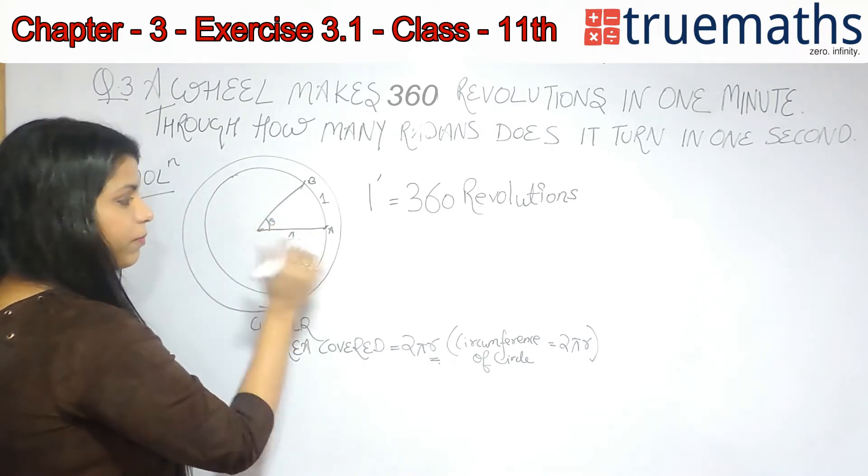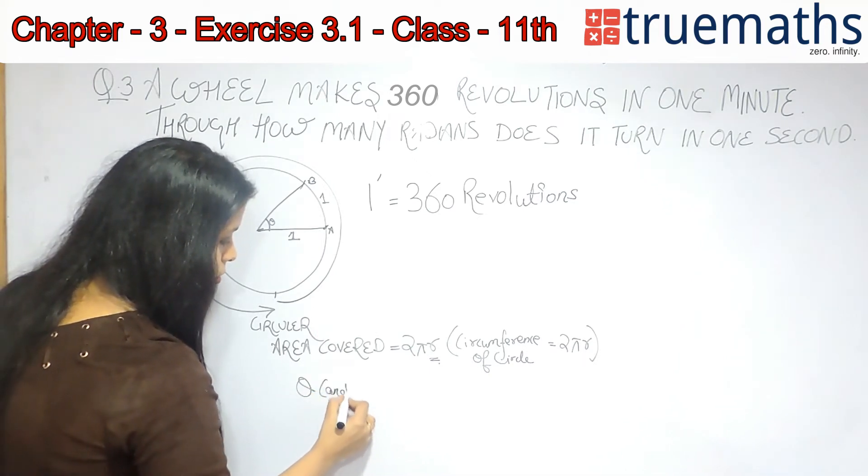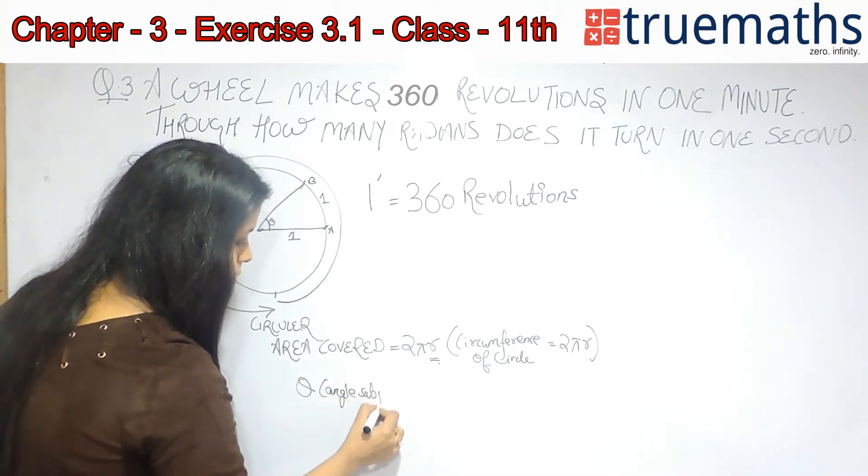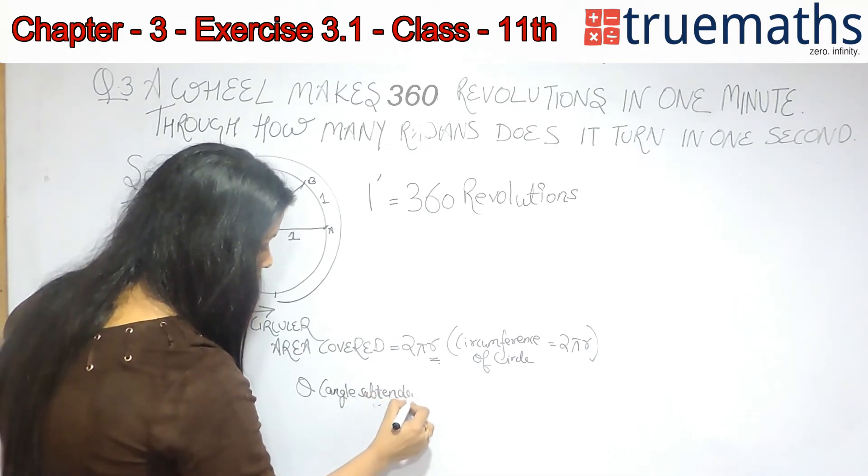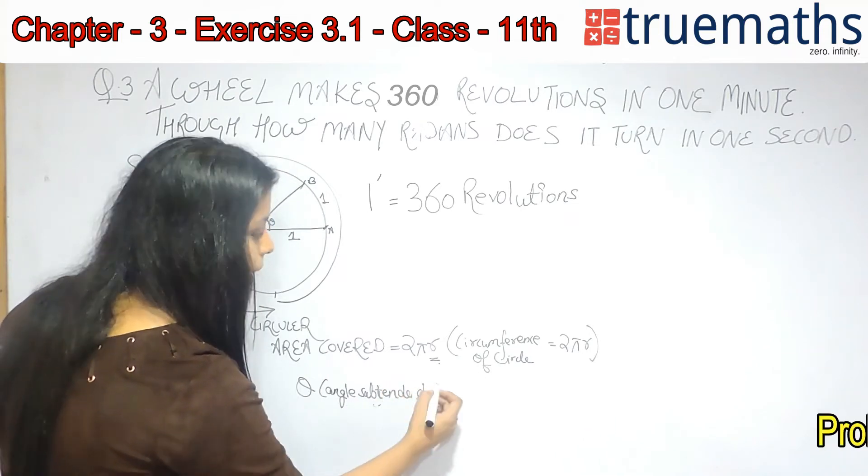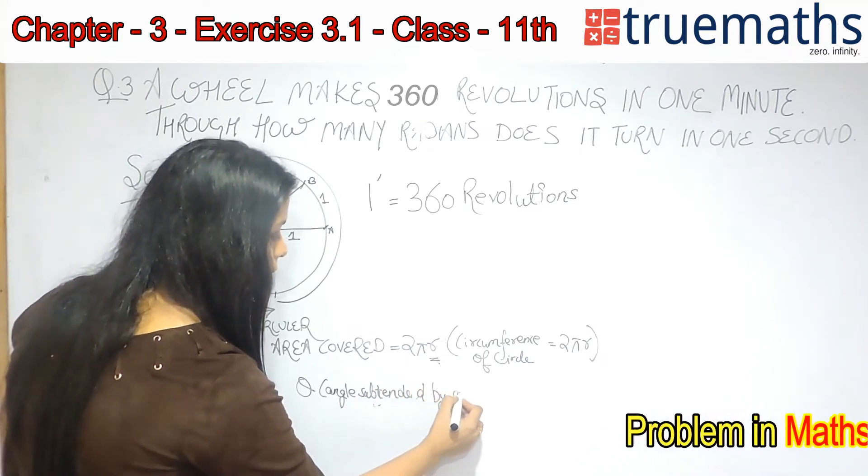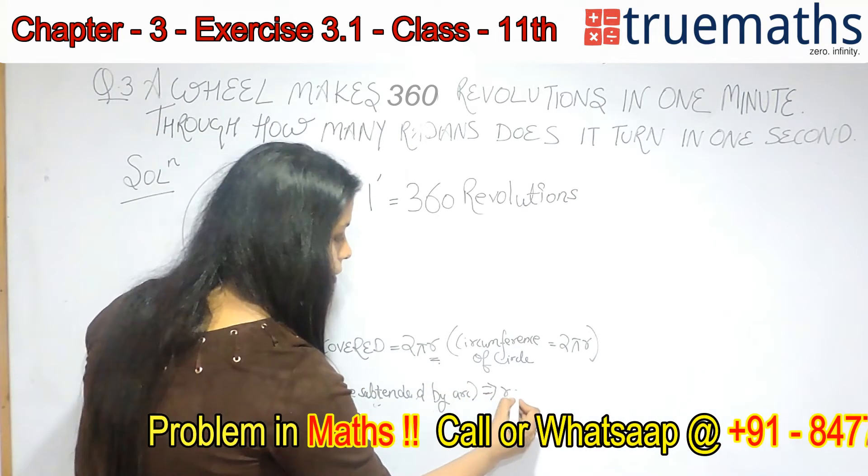then this arc sustains an angle at the center of 1 radian. This theta is the angle subtended by arc, and it is radian.